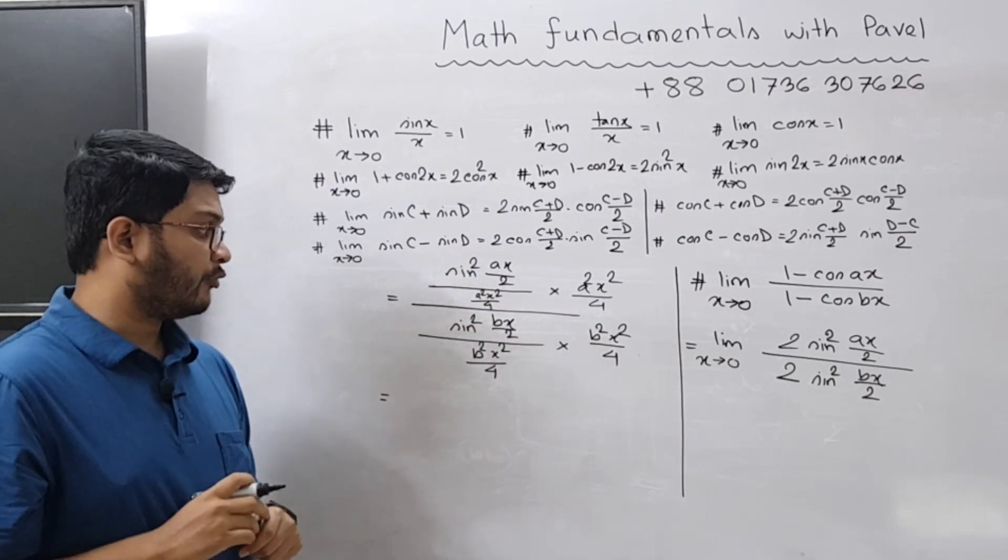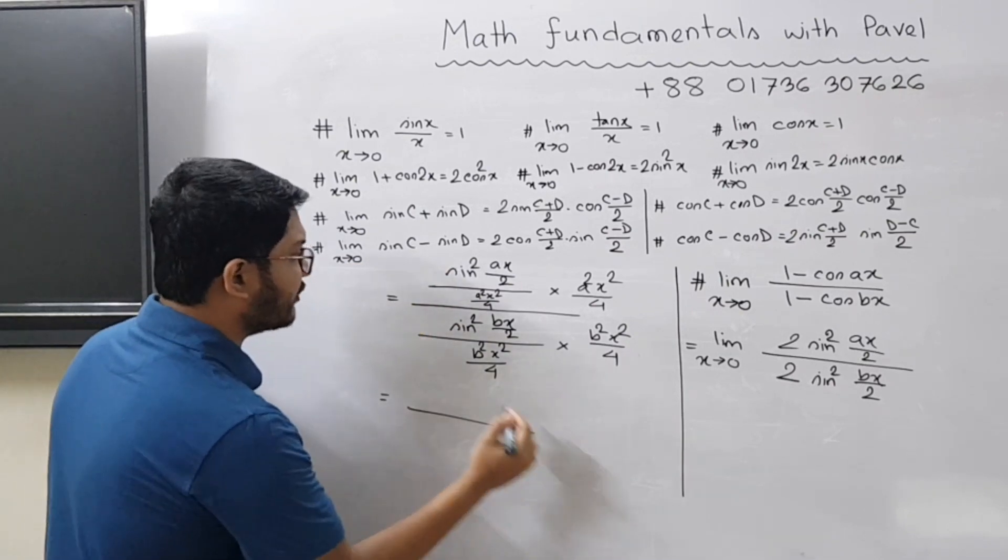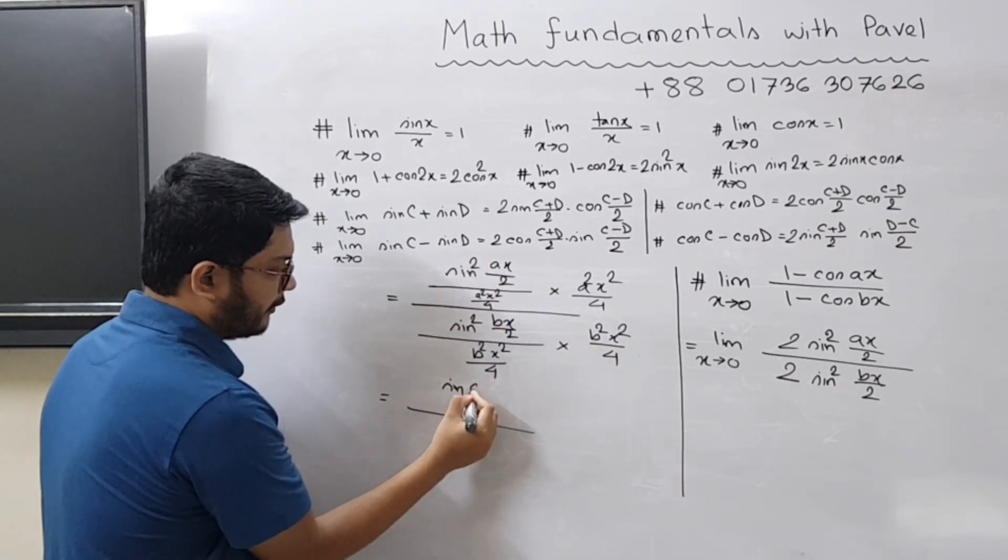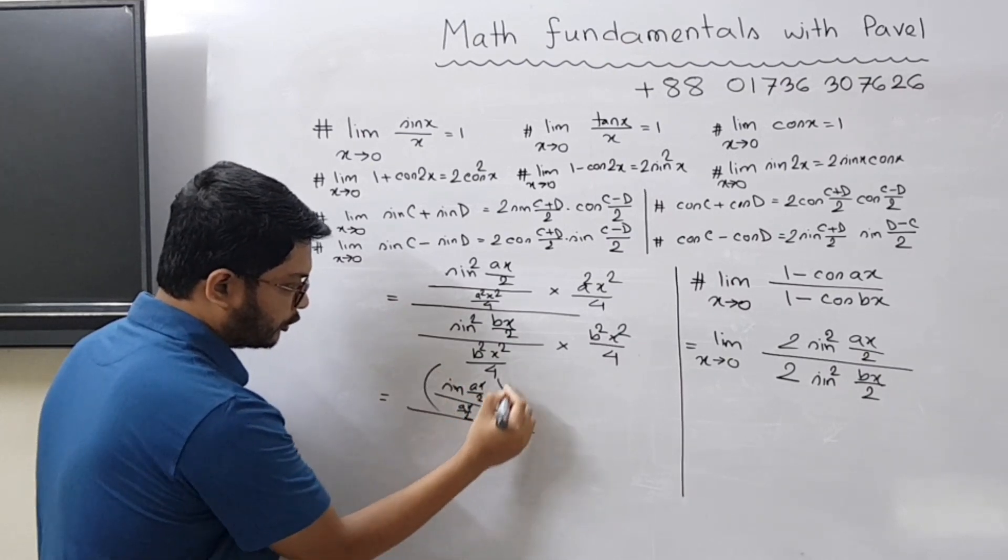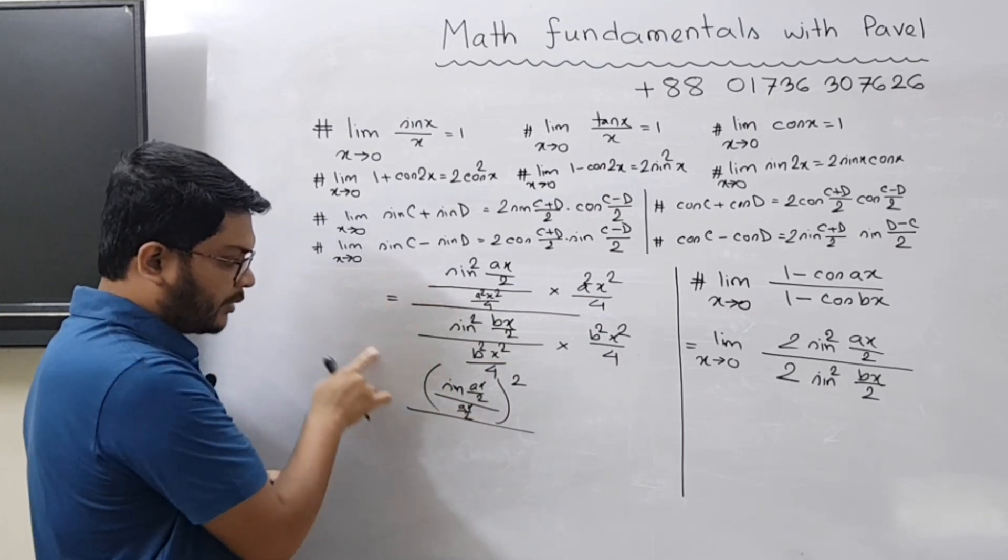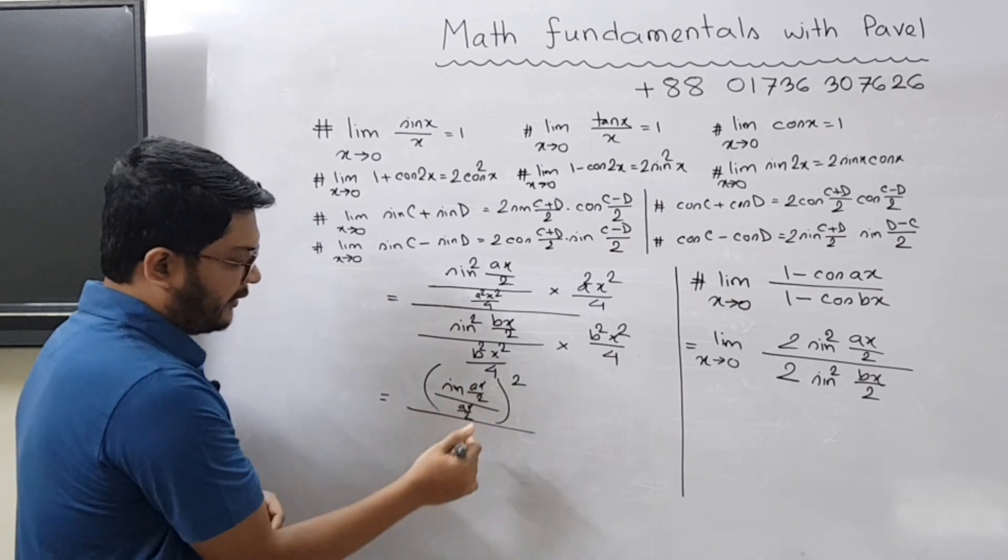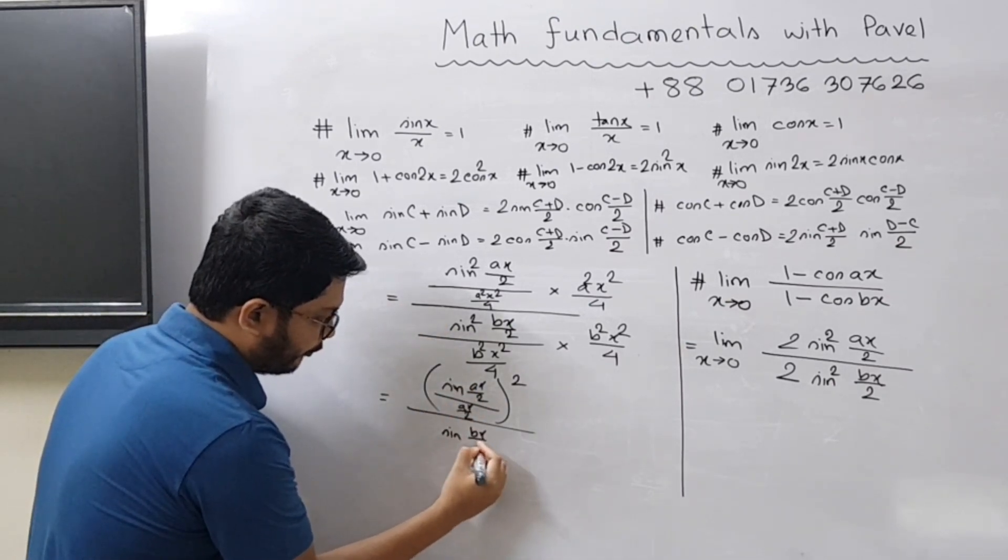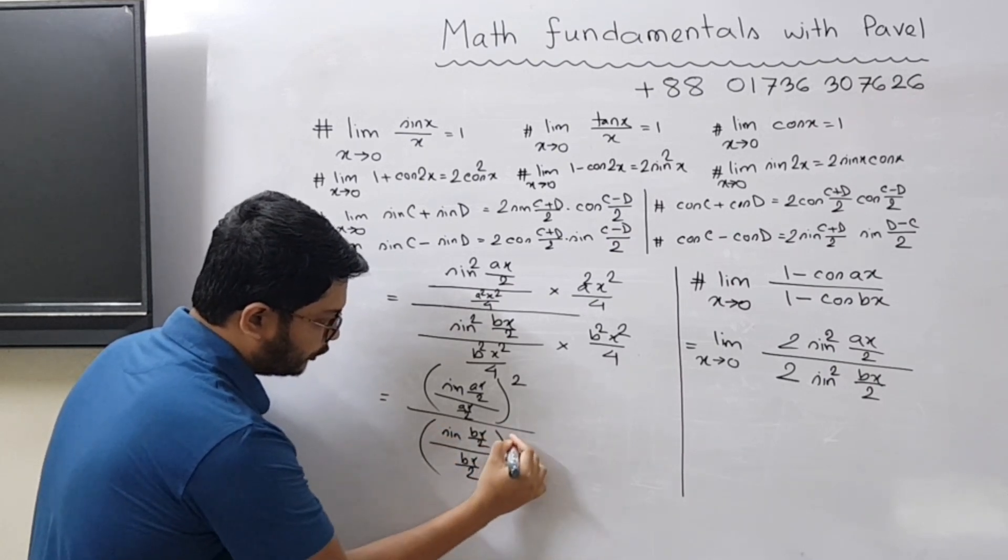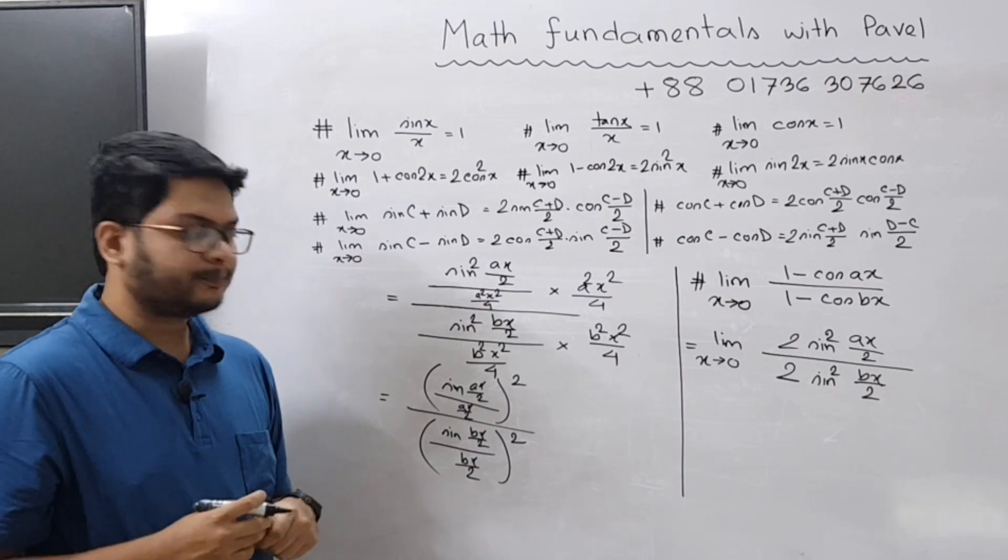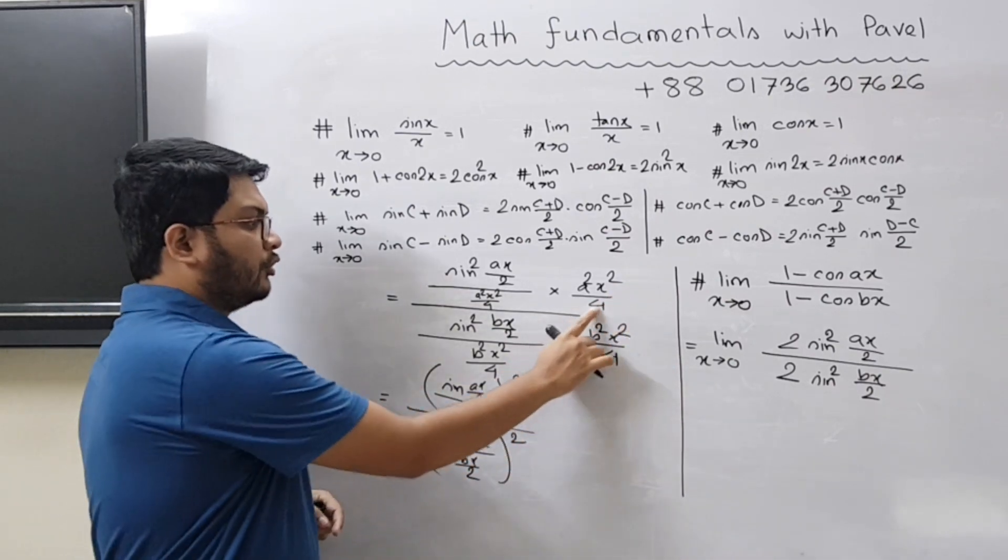Now you will understand why have we divided this part. Because we adjusted the theta. So now we can write this part as [sin(ax/2) / (ax/2)]². Similarly we can rewrite this part as [sin(bx/2) / (bx/2)]². And here in this part x² and x² they will cancel out, 4 and 4 cancel out. So you will have a²/b².